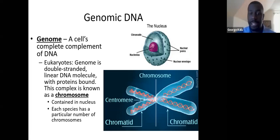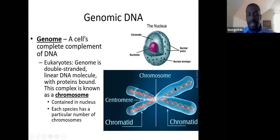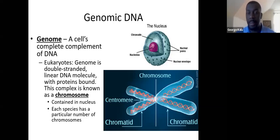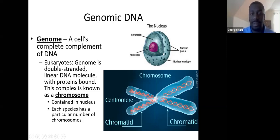In eukaryotes like humans, the DNA is still double-stranded but organized linearly. Those two strands of DNA are wrapped around proteins, forming a structure called the chromosome. All chromosomes are found inside the nucleus, which is the membrane-bound organelle containing the DNA. Each species has a specific number of chromosomes — humans have a total of 23 chromosomes.